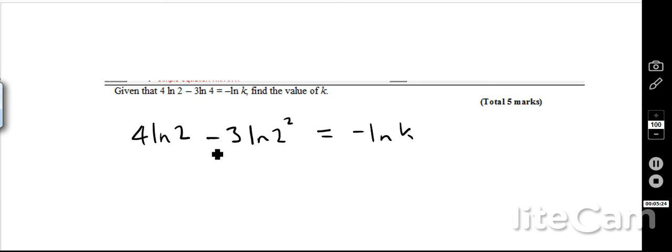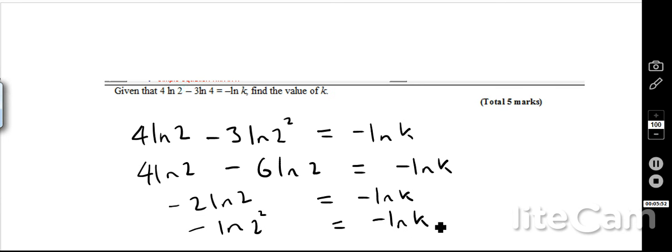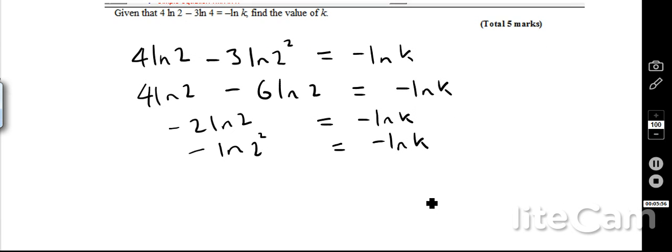Now I've got these in both terms in ln 2, well, I can then bring this power down here, so I get 4 ln 2 minus 6 ln 2 equals minus ln k. Well, now that's just going to simplify to being minus 2 ln 2 is equal to minus ln k, and again, if I bring this up here, I'm going to get minus ln 2 squared, and therefore k must be 4, because 2 to the power of 2 is 4. Ok, that's a quick question, then let's look at one last question.